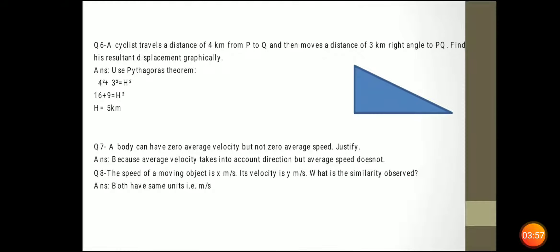A body can have zero average velocity but not zero average speed. Average velocity equals total displacement divided by total time — when initial and final points are the same, displacement is zero so average velocity can be zero. But average speed equals total distance divided by total time, and we don't consider initial and final points, so average speed cannot be zero.